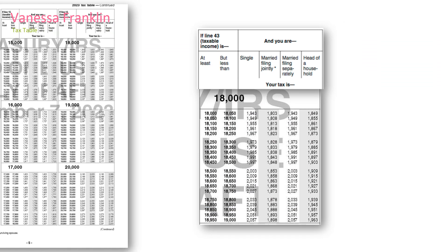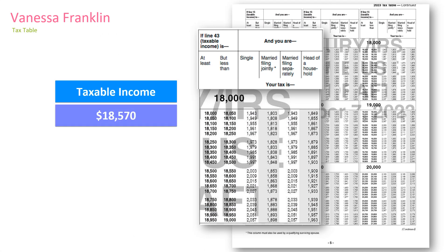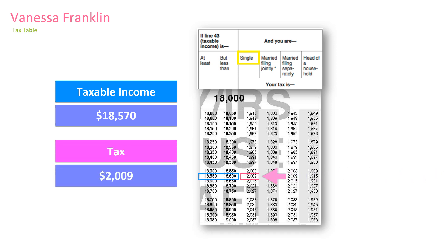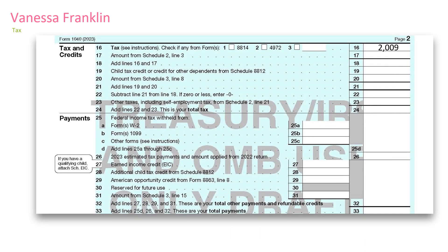So, what is Danessa's tax? The software will figure it out for you. However, if you were doing this the old-fashioned way, you would go to the tax tables. Since she is single and her taxable income falls between this range of numbers, that is where we find the amount of her tax. And that amount of her tax is carried to line 16 on her 1040.